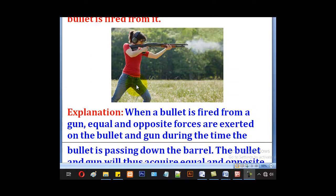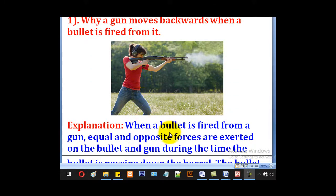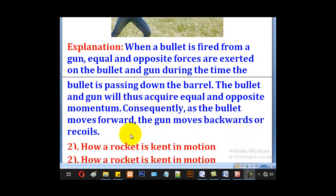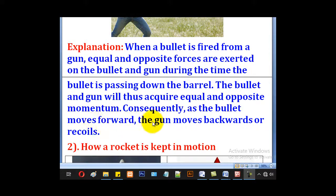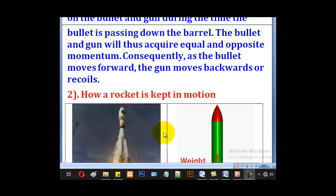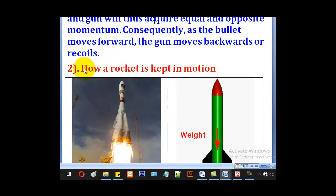the gun moves backward or recoils. So this explains why the gun jerks backward. Because momentum before has to be equal to momentum after. So this forward momentum will be equal to the backward momentum.